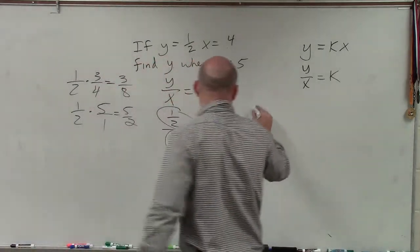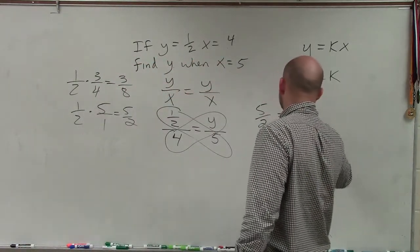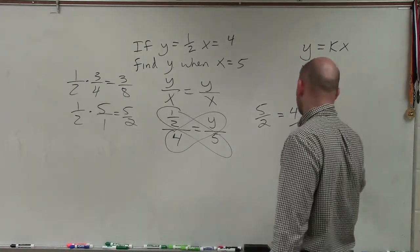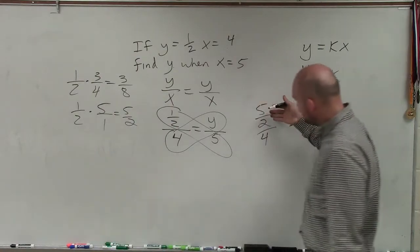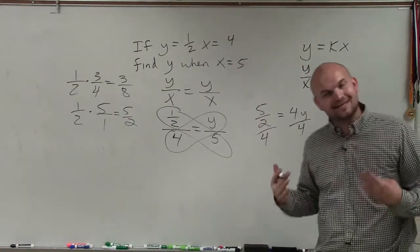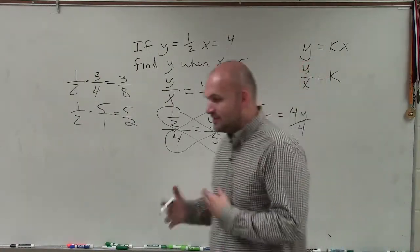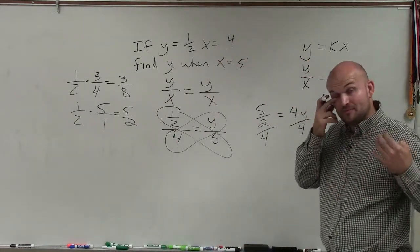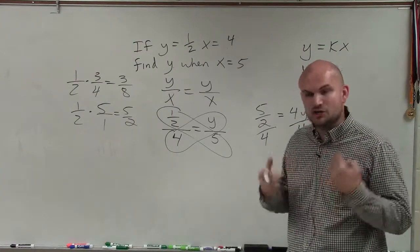So 1 half times 5 is 5 halves is equal to 4y. Now, to solve for y, I need to divide by 4, right? But when you're dealing with a fraction divided by a whole number, that can kind of get confusing. So I want to think about what is the same thing as instead of dividing by 4, what other operation could we use that might be a little bit more understandable?